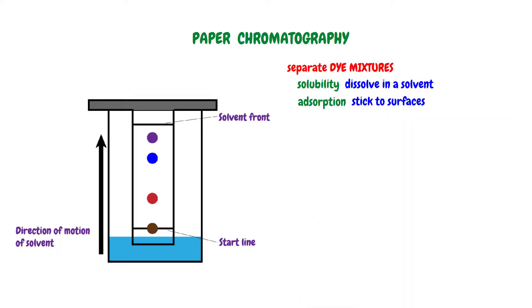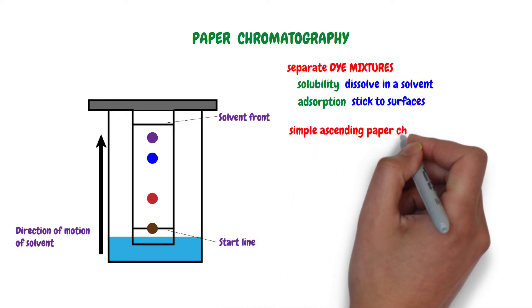There are two types of paper chromatography: ascending paper chromatography and descending paper chromatography. This video covers simple ascending paper chromatography.